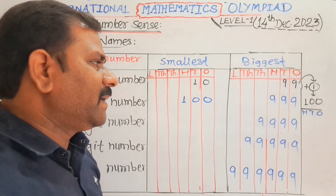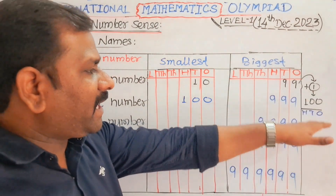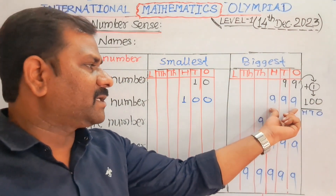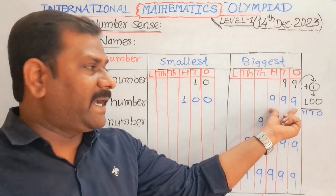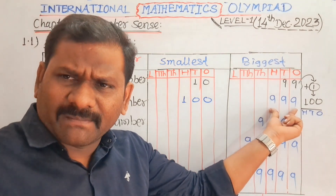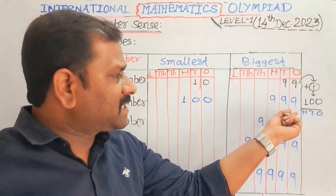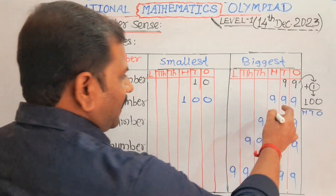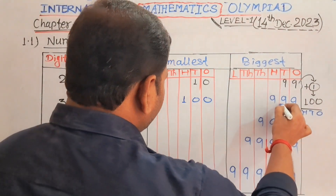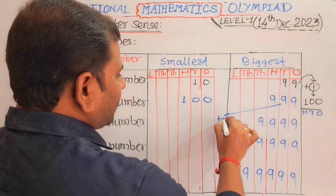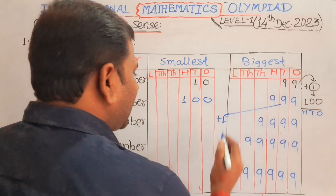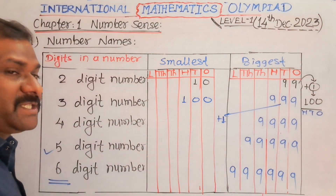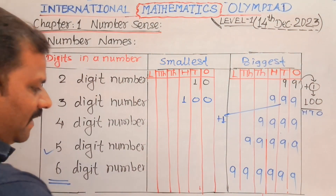And a very simple trick: if you add one to any of these biggest numbers — for example, 999 is the biggest three-digit number — when we add one to it, you will get a number with four digits. Four digits will be formed.